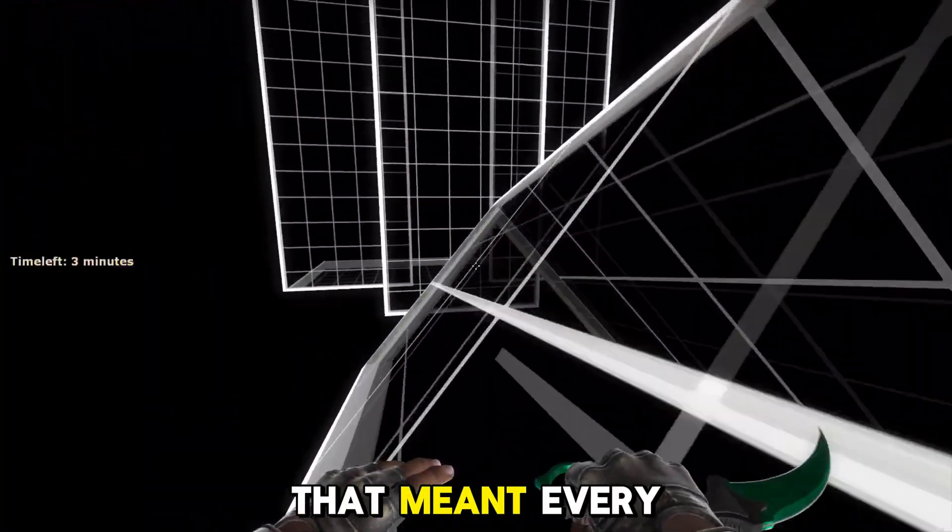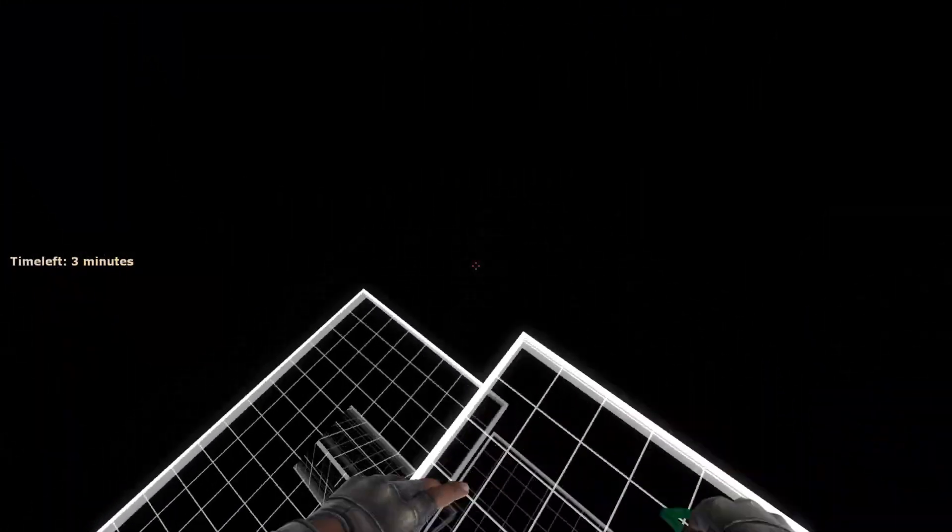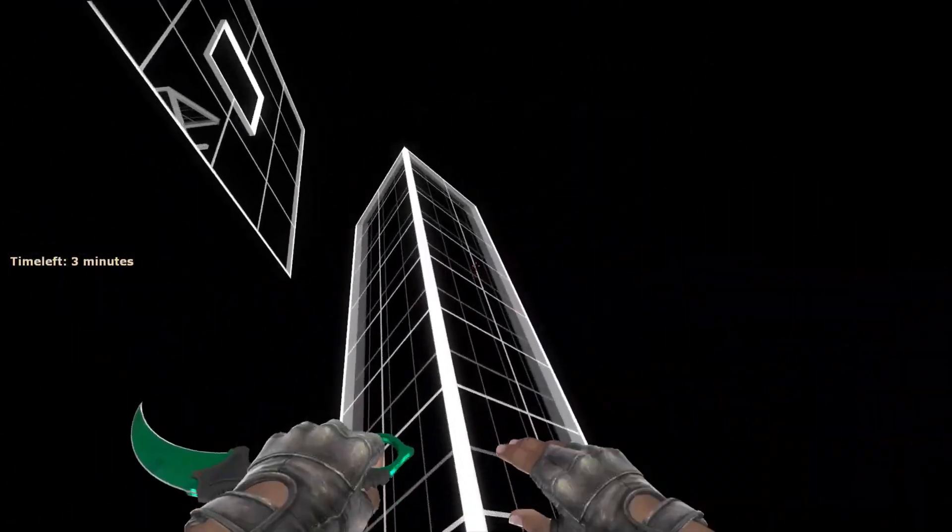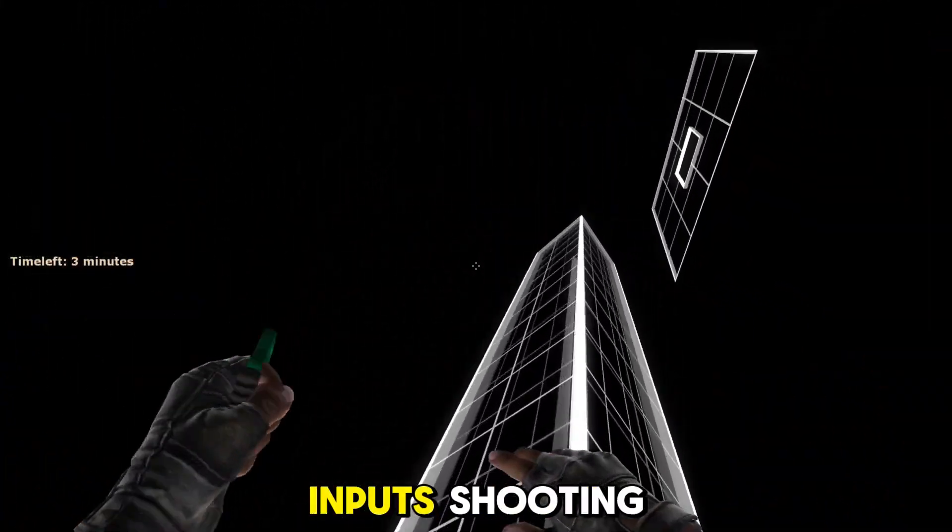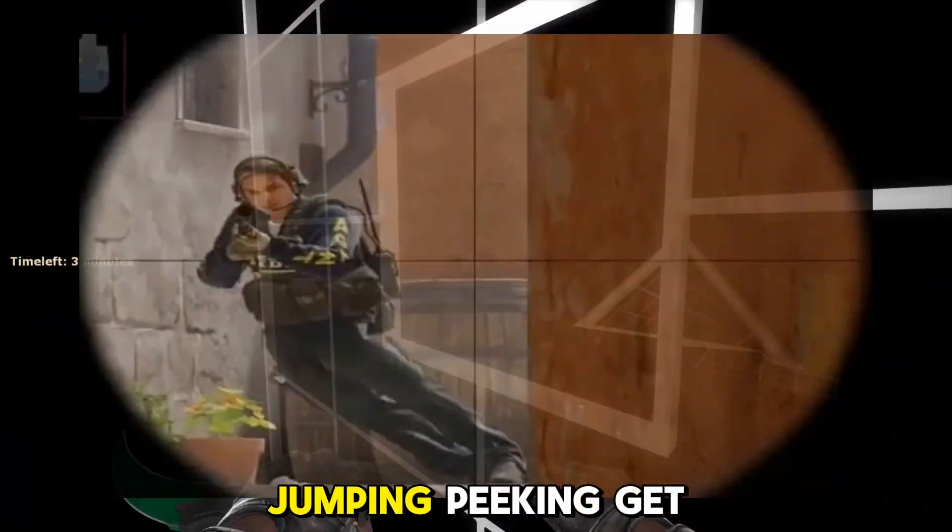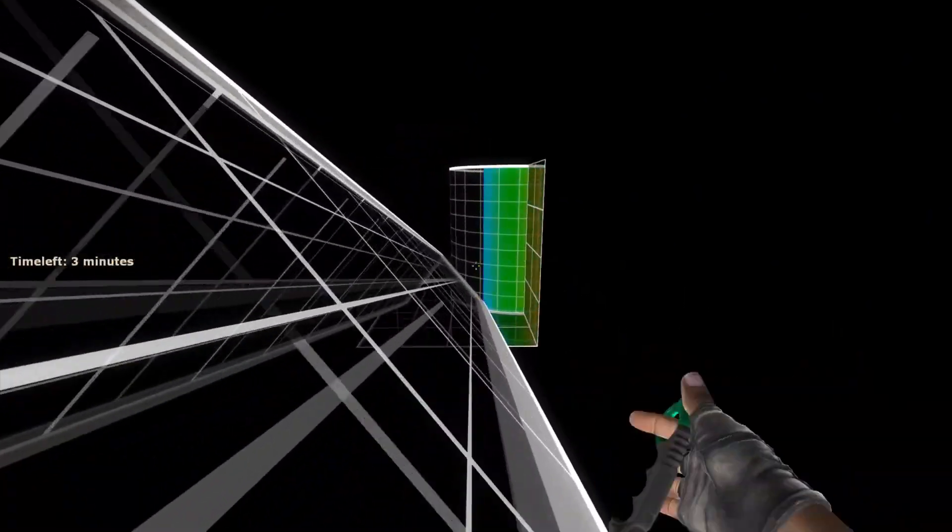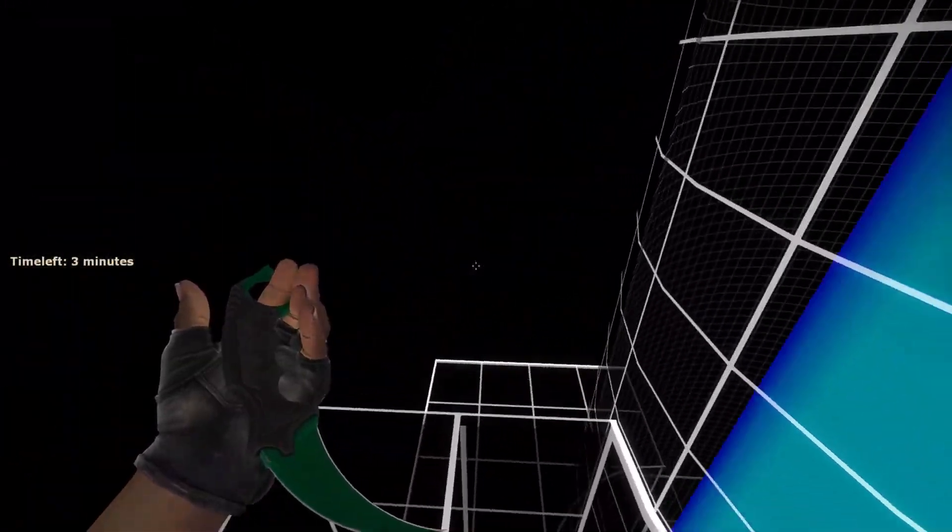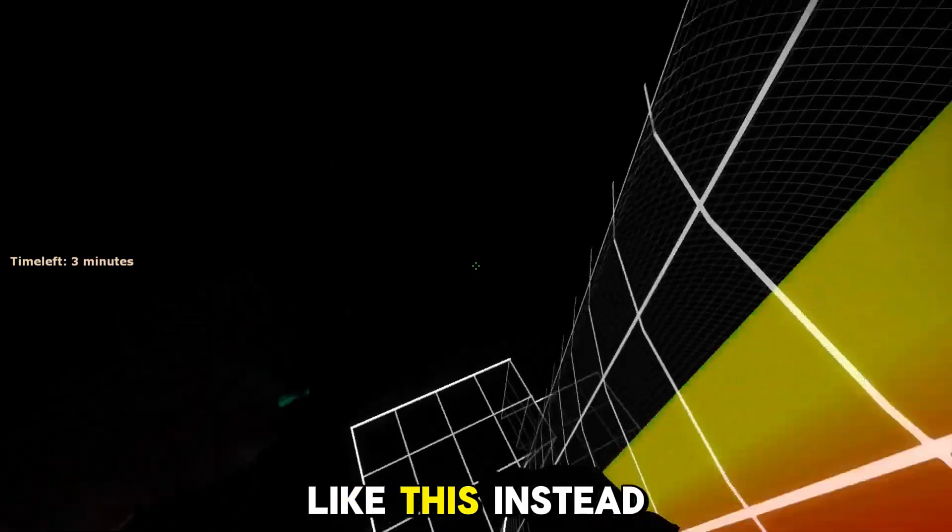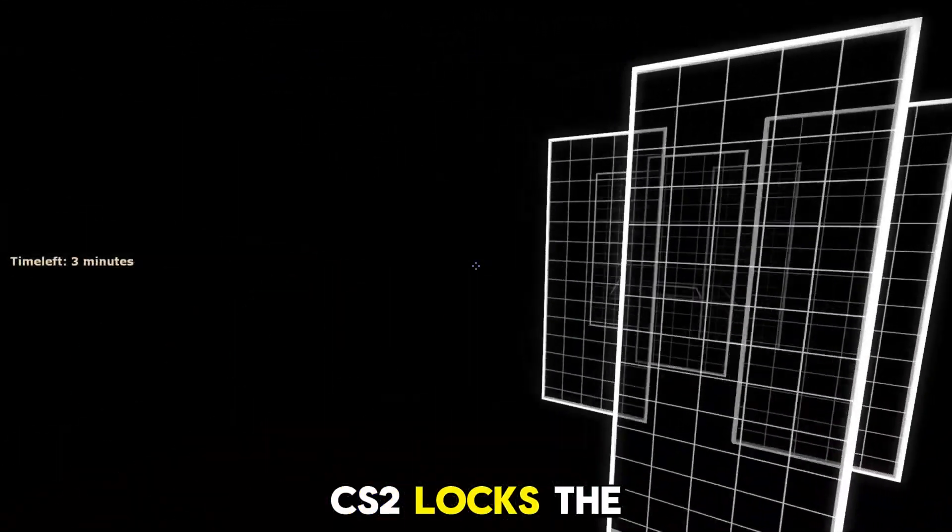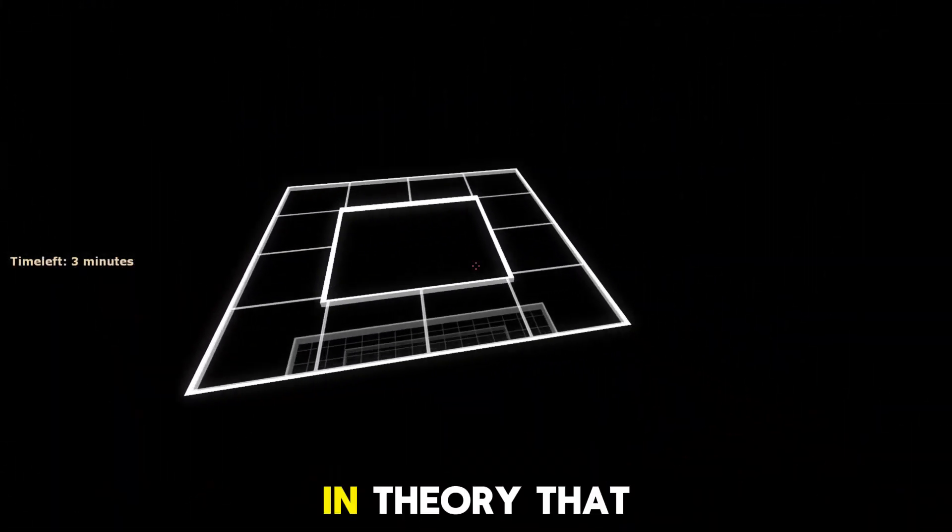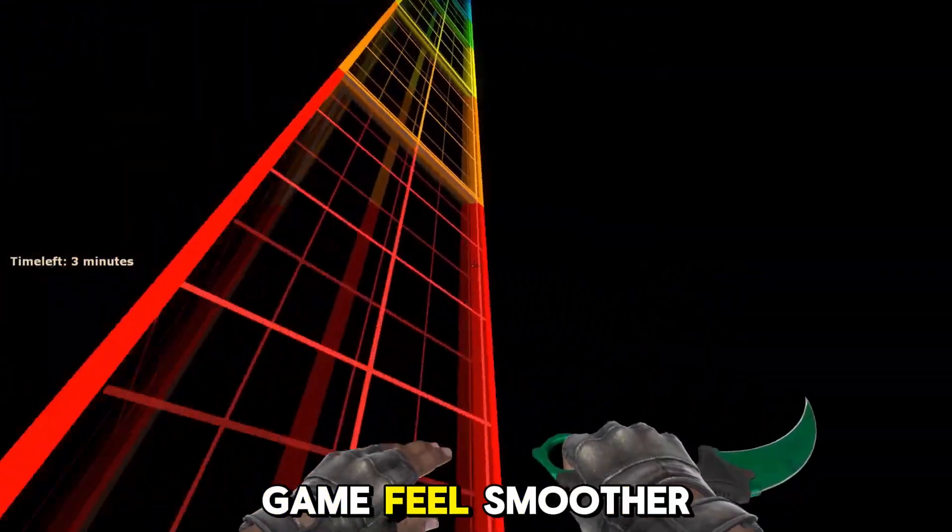CS2 introduced substick timing, which means your inputs—shooting, jumping, peeking—get recorded more precisely in between ticks. Think of it like this: instead of waiting for the next frame, CS2 locks the exact time you clicked. In theory, that should make the game feel smoother and more responsive.